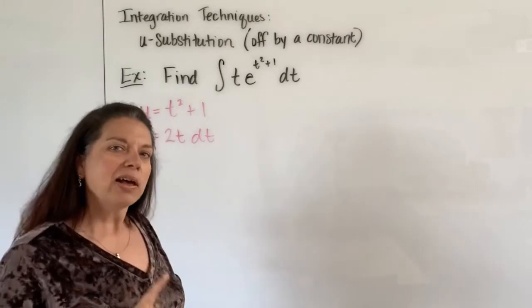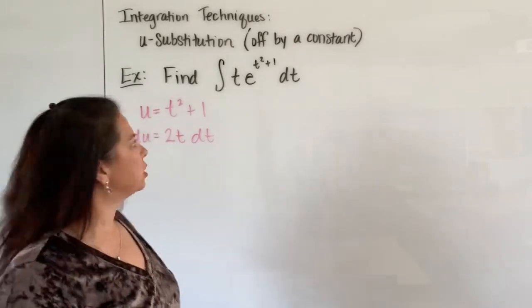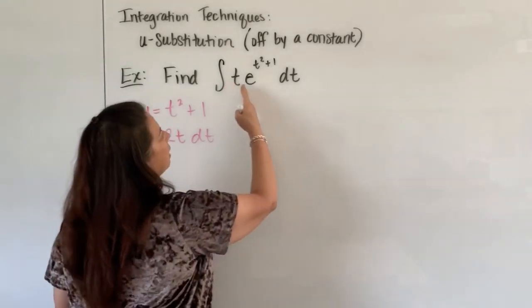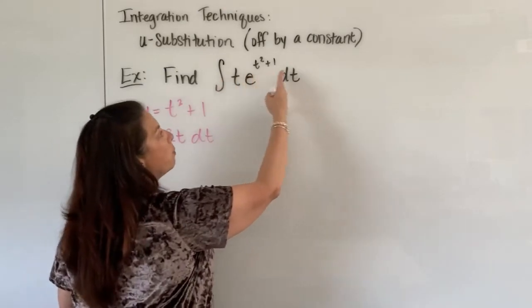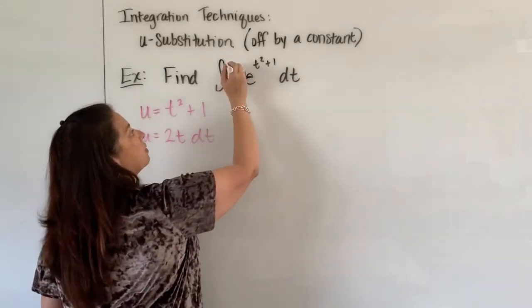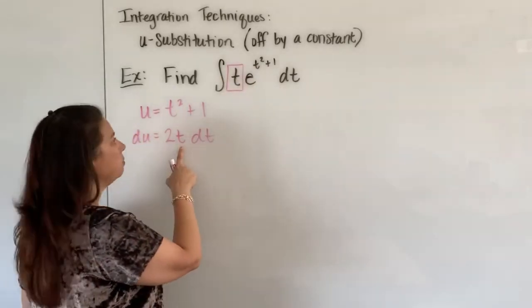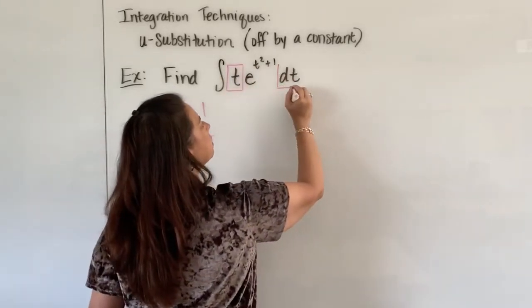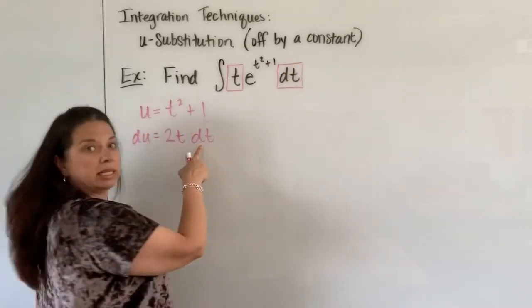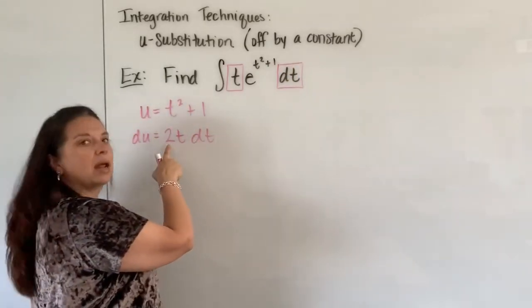All right now I look really carefully at the integrand that I was given and I scour all the parts that I have here and I notice I have a t. Okay that's great. I have a t right here. I also have a dt hanging out here. I have a dt. Awesome.